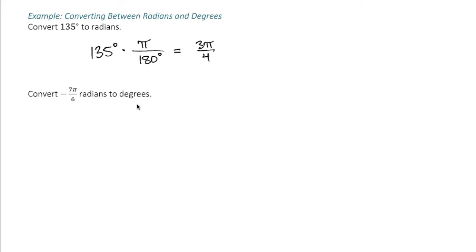Now to convert from radians to degrees, we've got negative 7 pi over 6. We multiply by 180 degrees over pi. Let's do this one by hand to get comfortable with it.